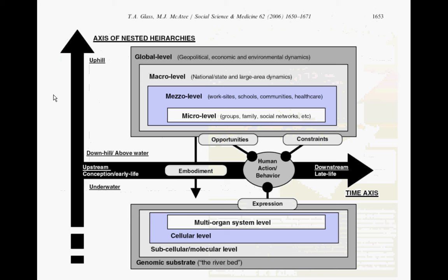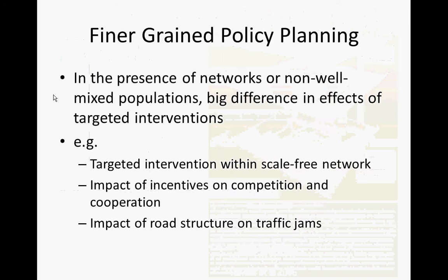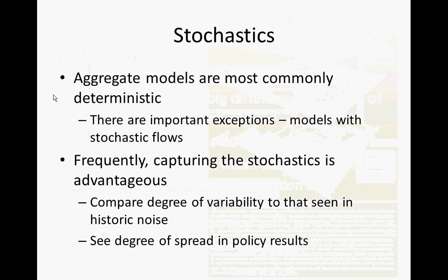If we're trying to understand multiscale effects, these are much more readily captured within an agent-based model. We can capture nested or network context within those models quite readily — as we saw from building up that model of multiple cities, each of which had multiple individuals within it. Here we can capture these nesting phenomena in a way that mirrors the nesting we see in the broader world. In terms of stochastics, aggregate models are most commonly deterministic.